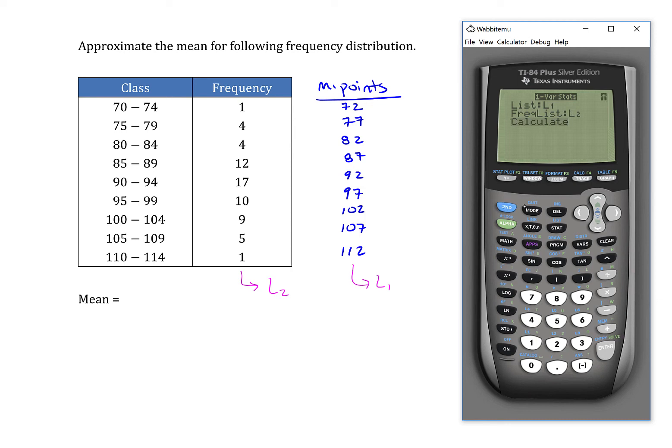If you're not seeing that, it just means that you either have an 83 or one of the earlier model 84 calculators. And to do one varistats there, you'll see it on the home screen. Press second and one, then comma, second and two, and it'll do the exact same thing.